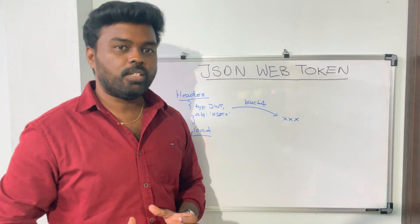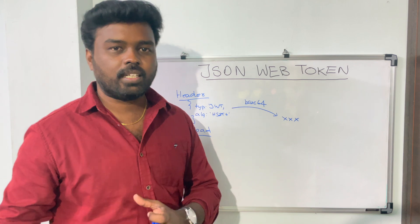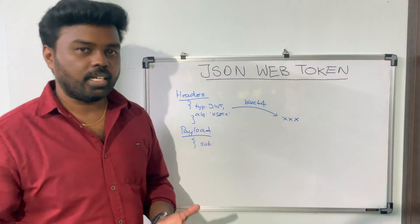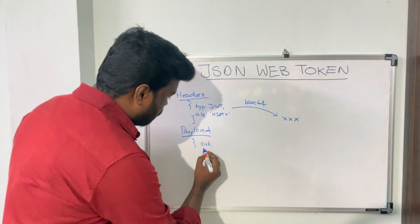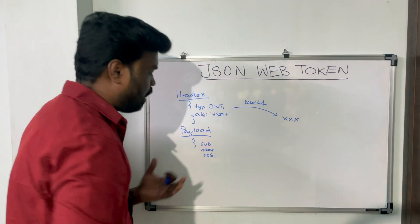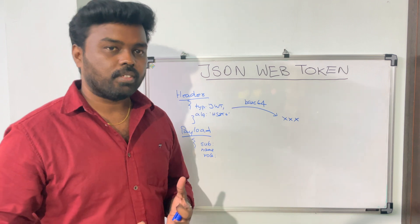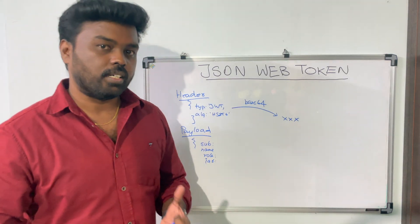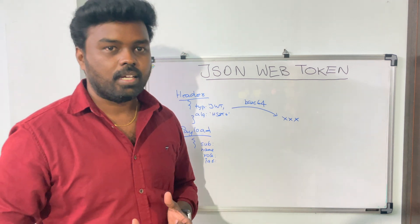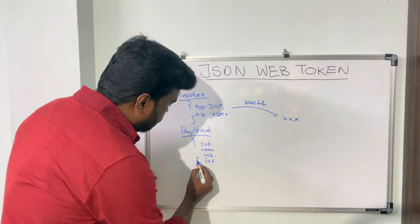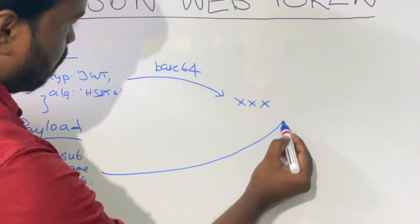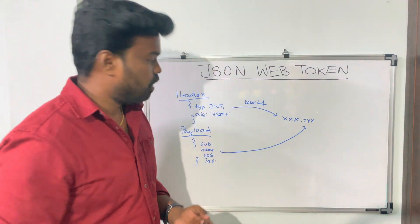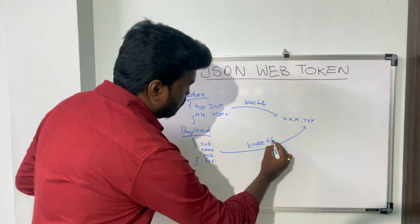The payload is the section where you keep all user-related data — it contains information about the user and details about the privileges that the user has. You can keep attributes like 'sub' which refers to the user ID, the username, or the role of the user such as admin. You also need to have the expiry time of the token — that's where the attribute 'iat' (issued at) comes in, storing the timestamp of when the token was created, used to verify whether the token is valid. This section is also base64 encoded and becomes the second part of your token, separated from the first by a dot.